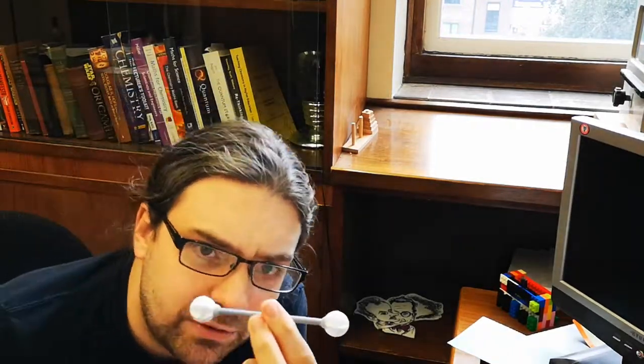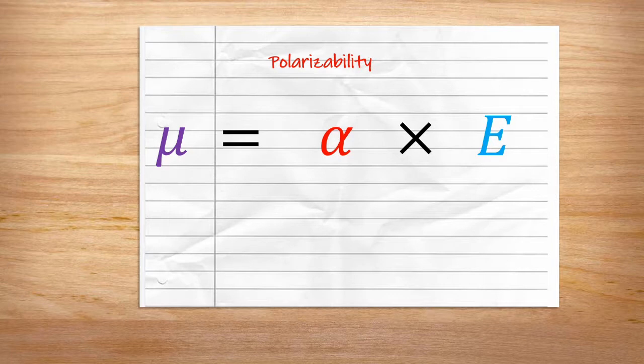Further away from the nuclei at longer wavelengths, this electron can be pushed around a lot more easily. We can quantify polarizability, how easily the electrons can be pushed around, as a proportionality constant that relates to the strength of the electric field that's applied to the molecule and the strength of the dipole moment that's produced.